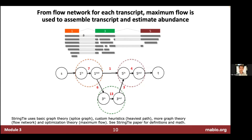StringTie uses graph theory, custom heuristics, and optimization theory — described comprehensively in the StringTie paper. Unlike many other approaches, you get transcript-level expression estimates and a sense of the certainty of each isoform's expression estimate.